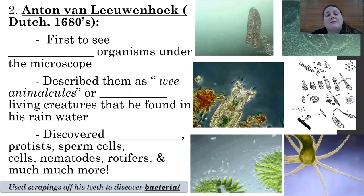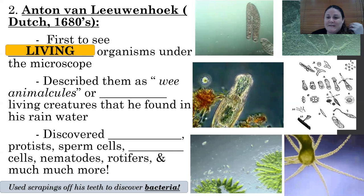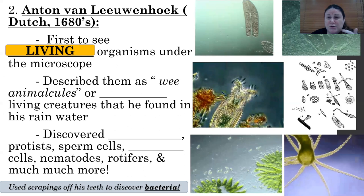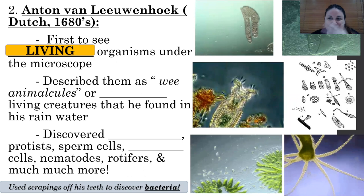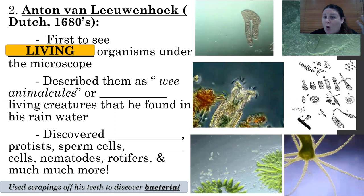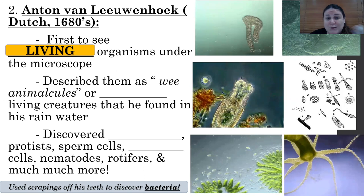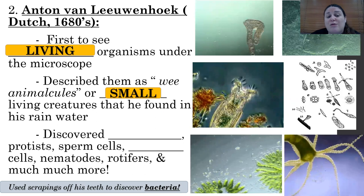The next scientist is Anton van Leeuwenhoek. He was the first to see living organisms under the microscope. He took pond water, puddles of rainwater from the streets, and took scrapings off of his teeth. His mind was blown away when he looked under the microscope and saw all of this stuff swimming around. This is in the 1680s, so he didn't say 'OMG' — he described them as 'wee animalcules,' basically small living creatures that he found in the rainwater.